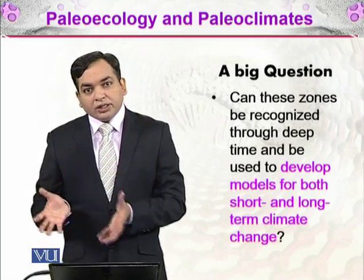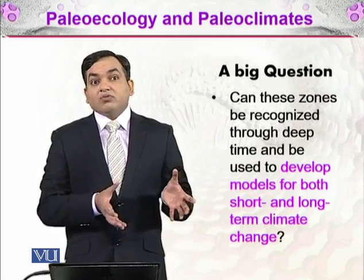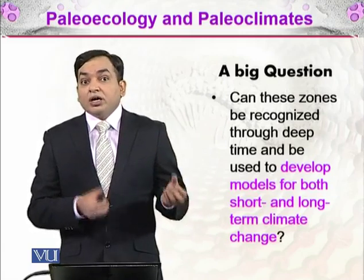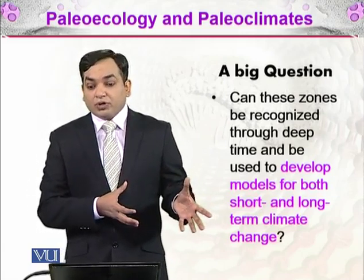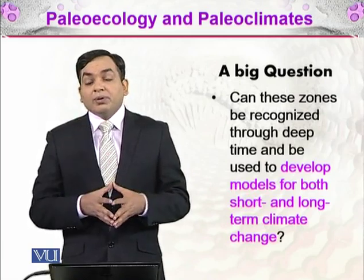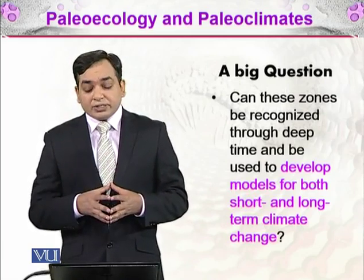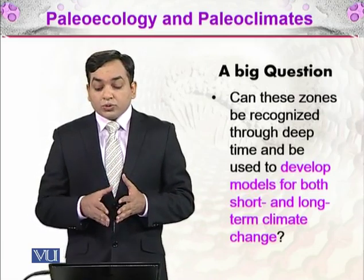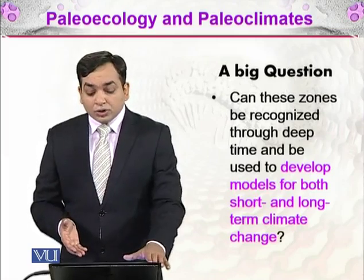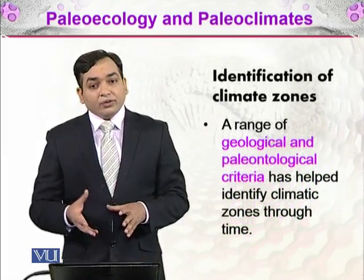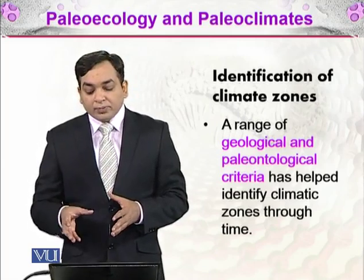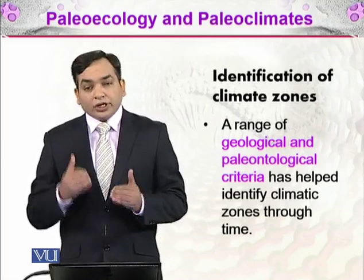Now take this context into ancient times. If we want to discuss what sort of environment was prevailing for a particular organism living in a particular area, we have to determine what paleoclimate existed there. This is a big question, and as with paleoecology there is some element of speculation. However, a range of geological and paleontological criteria has helped to identify climatic zones through time.